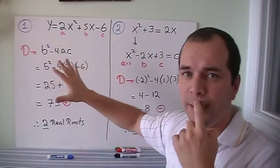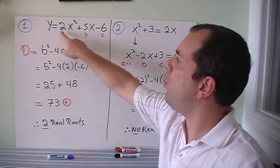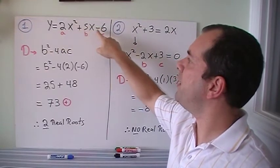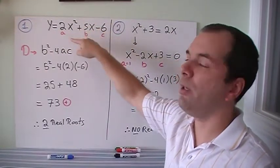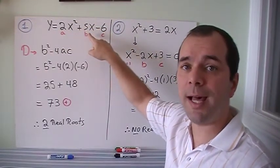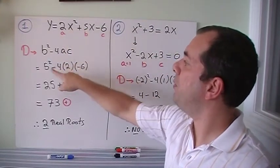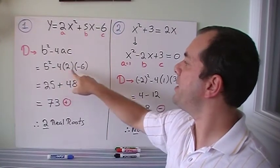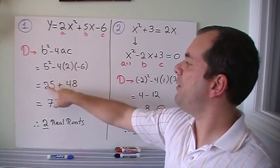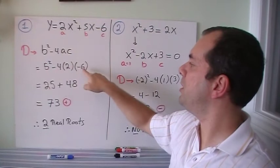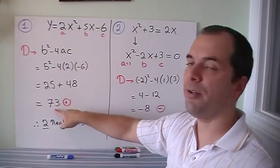So let's look at two examples. If I have y equals 2x squared plus 5x minus 6, and I want to find out how many real roots this equation has, then I say a is 2, b is 5, c is minus 6. I plug it in. A minus and a minus gives me a plus, so 5 squared is 25, 4 times 2 times 6 is 48, add them together, 73.